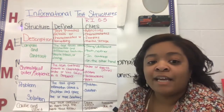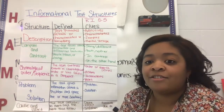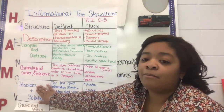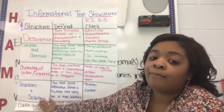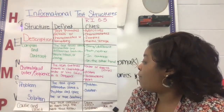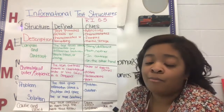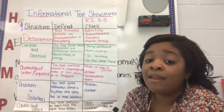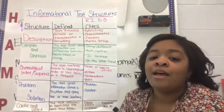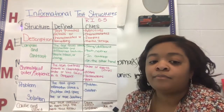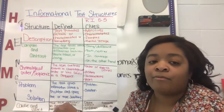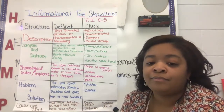Our fourth text structure is problem and solution — and it's just that. The author tells us a problem, but they don't just leave it there; they tell us how to solve it with a solution. So the text gives information about a problem and gives one or more solutions — one or more ways to solve that problem. In those texts, you're probably going to see words like problem, solution, and issues.